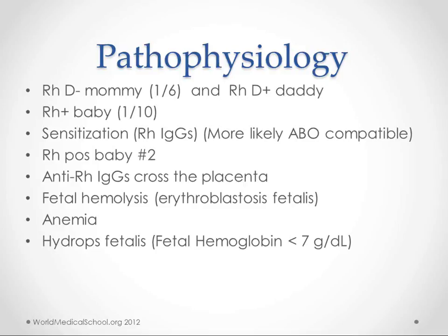This leads to what we call erythroblastosis fetalis — erythroblasts are just precursors to red blood cells. So we get an increase in erythroblasts circulating in the fetal blood system. And this hemolysis causes anemia, because we don't have enough red blood cells anymore.